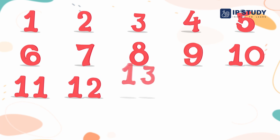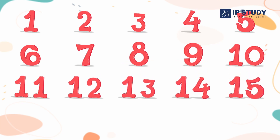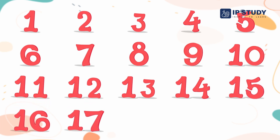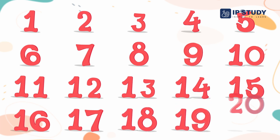Counting 1 to 20: 1, 2, 3, 4, 5, 6, 7, 8, 9, 10, 11, 12, 13, 14, 15, 16, 17, 18, 19, 20.